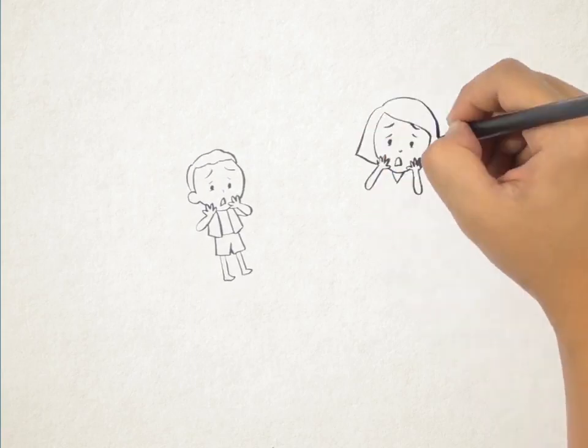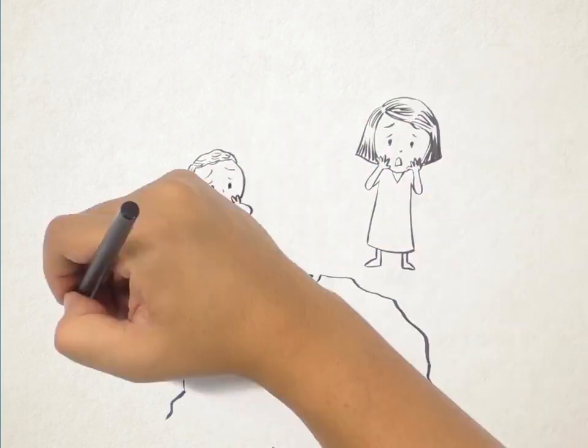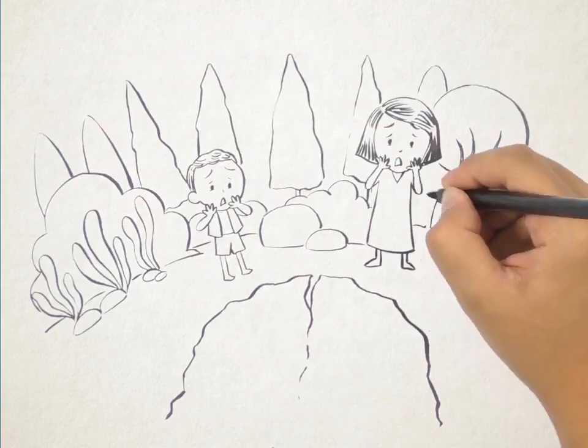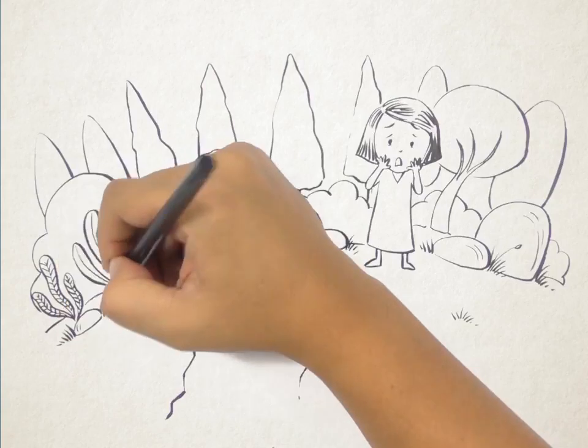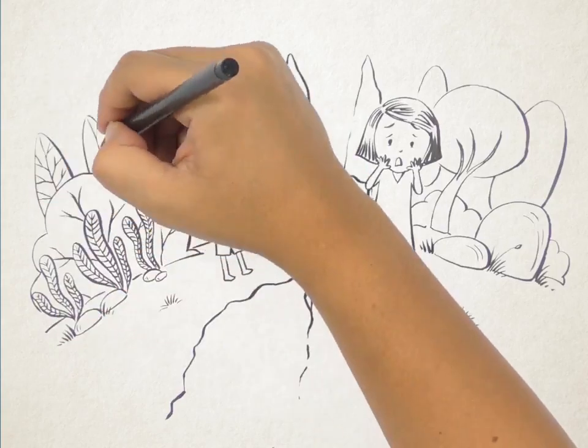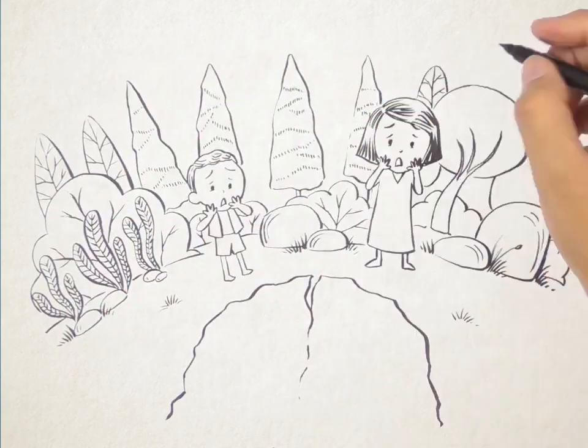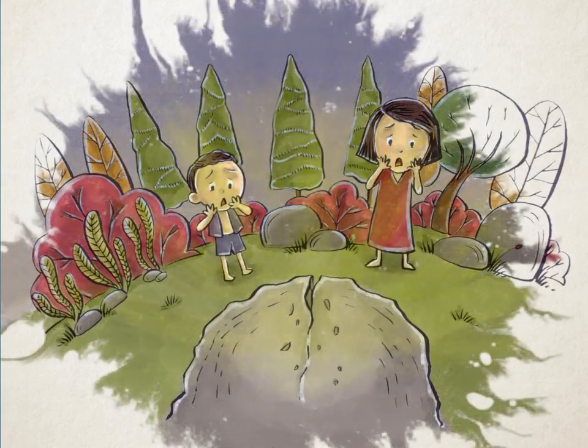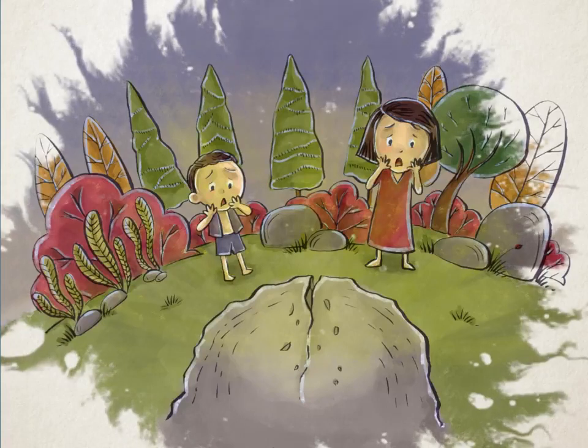She ran towards the devouring rock and then she stood at the mouth of the boulder. Suddenly, the boulder made a loud rumbling sound and swallowed the woman. By the time Malur and Pakan arrived, they found only strands of their mother's hair on the rock's surface.